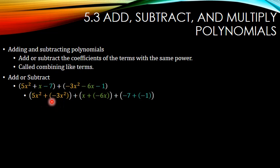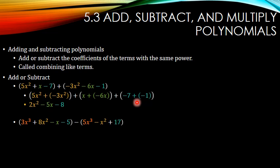So this gives me 2x-squared, negative 5x, and negative 8. Let's try another one.